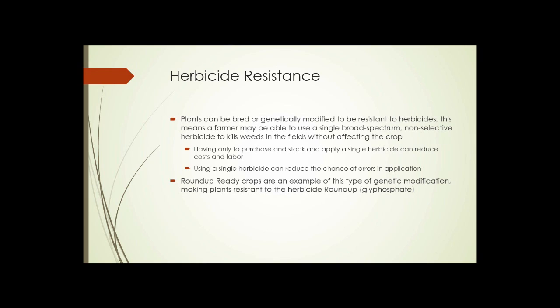Herbicide resistance: plants can be bred or genetically modified to be resistant to herbicides. This means a farmer may be able to use a single broad-spectrum, possibly non-selective herbicide to kill weeds in the fields without affecting the crop — regardless of the type of weed, and in some cases, the crop being grown. Having to only purchase, stock, and apply a single herbicide can reduce costs and labor. Using a single herbicide can also reduce the chances of error in application because it's always applied in the same way. Roundup-Ready crops are an example of this type of genetic modification, making plants resistant to the herbicide Roundup, or glyphosate.